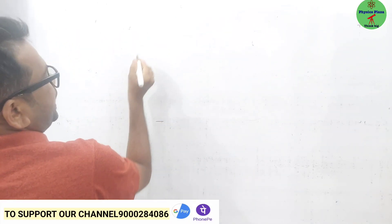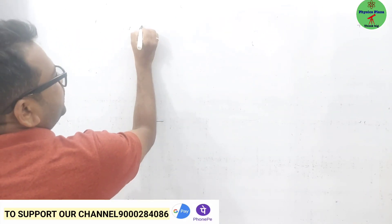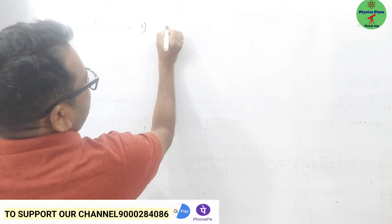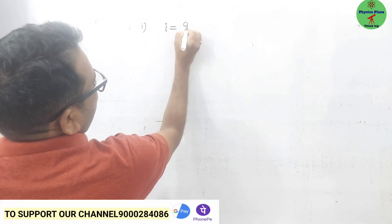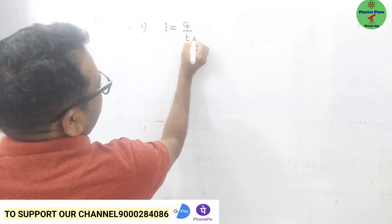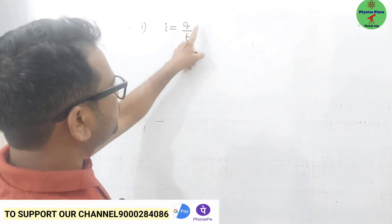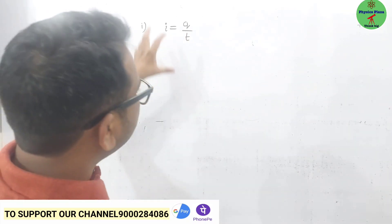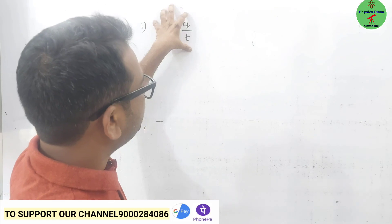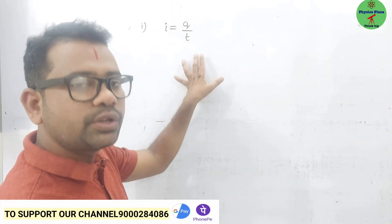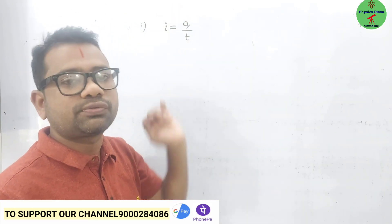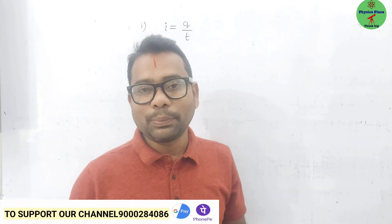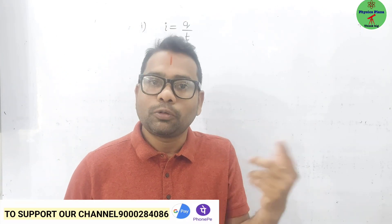Let us recall. The first formula: as per the definition of current, I is equal to Q by T. Here Q is charge, T is time, and I is current. Out of these three physical quantities, if any two are given, we use this formula. You have to check what data is given in the numerical and go further based on that.